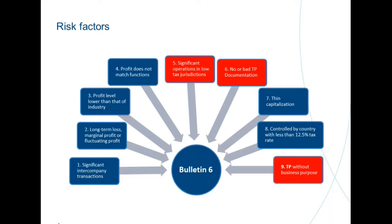One important example on Bulletin 6: if you have a Chinese legal entity in your group that pays a royalty to an IP owner hub in, say, Switzerland, but that Swiss entity does not have people on its payroll performing DEMPE functions, China under this bulletin would consider that royalty payment non-deductible. They say there are no people at the receiving end who actually perform these DEMPE functions, and therefore it is non-deductible. This means Chinese tax authorities are really stepping up in the light of BEPS, putting anti-abuse provisions into their local legislation right away.